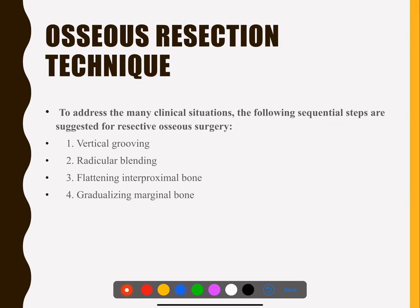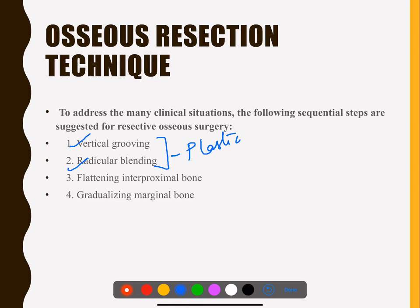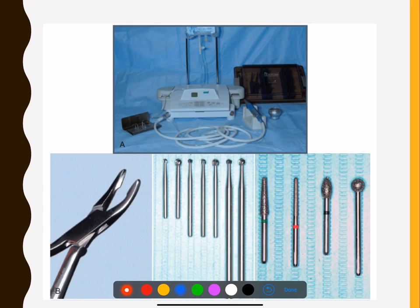Vertical grooving and radicular blending are part of osteoplastic procedures, whereas flattening of interproximal bone and gradualizing of marginal bone are osteectomy procedures — that means the supporting bone is cut.